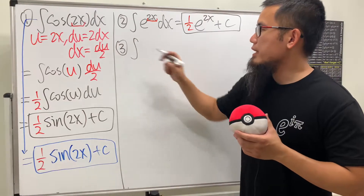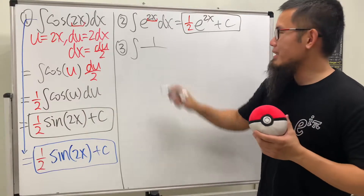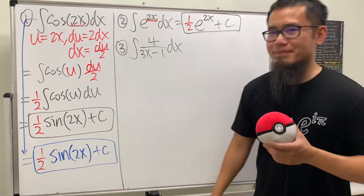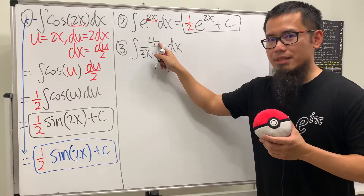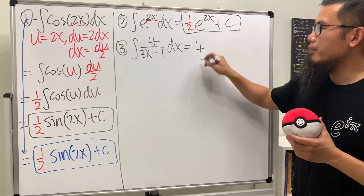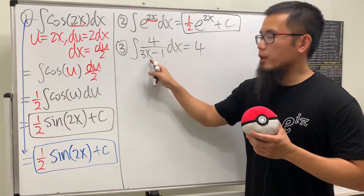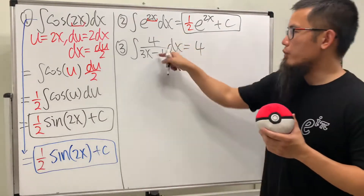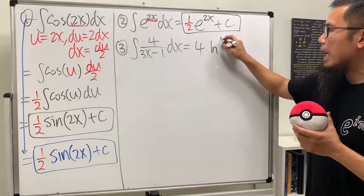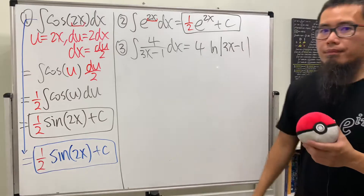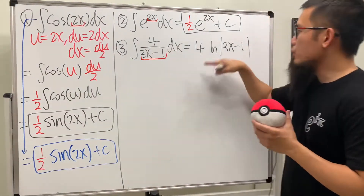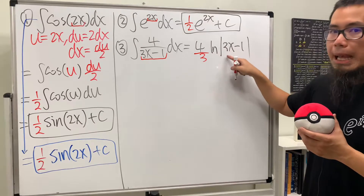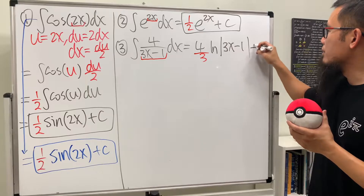Number 3: the integral of 4 over (3x minus 1) dx. The 4 is just a constant multiple — put it in front. You see this is just 1 over u if you let u equal the denominator. The derivative of 3x minus 1 is just 3. Integrate 1 over u to get ln of the absolute value. So we get ln|3x − 1|, and divide by the derivative 3. The answer is (4/3)ln|3x − 1| plus C.